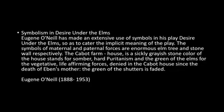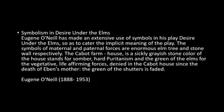Eugene O'Neill has made an extensive use of symbols in his play Desire Under the Elms so as to convey the implicit meaning of the play. The symbols of maternal and paternal forces are enormous. The elm tree and stone: the Cabot farmhouse is a sickly grey-stone colour. The colour of the house stands for sombre, hard Puritanism, and the green of the elms for the vegetative, life-affirming forces denied in the Cabot house. Since the death of Eben's mother, the green of the shutters has faded.